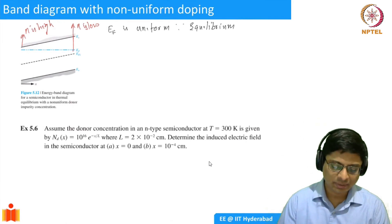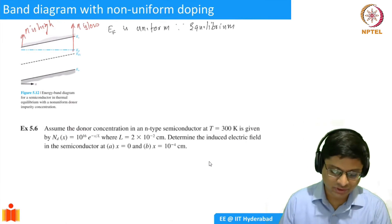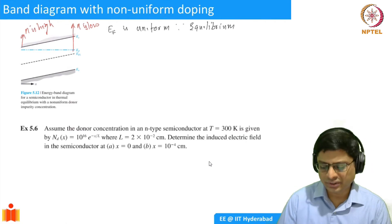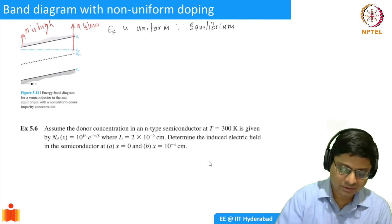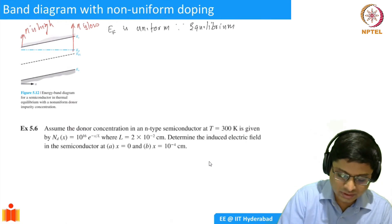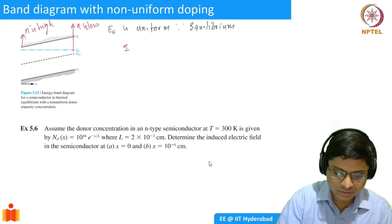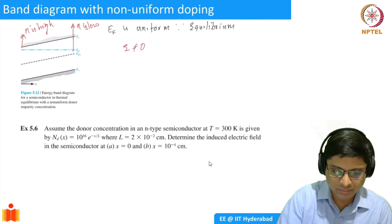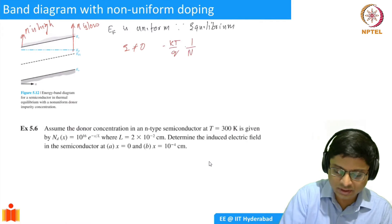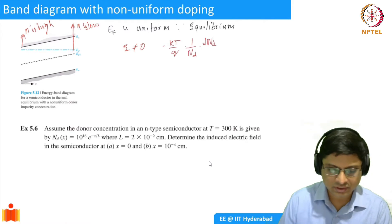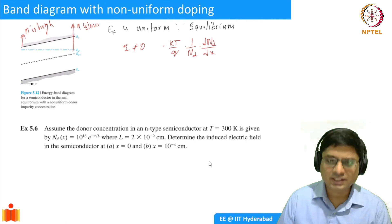Because E_F is farther away from E_C, the concentration is low. So there's a built-in field which is positive. Essentially, E is not equal to zero, giving a built-in field of minus (kT/q) times (1/N_D) times dN_D/dx.